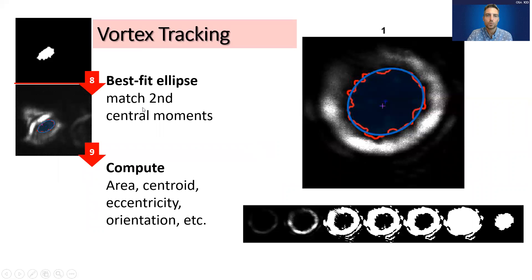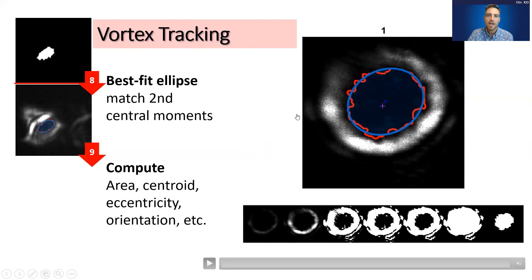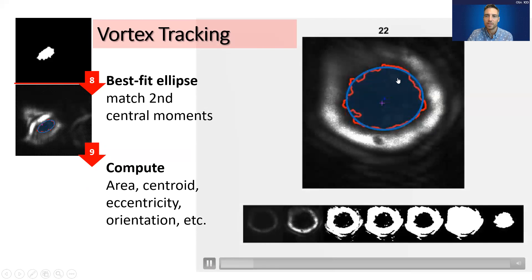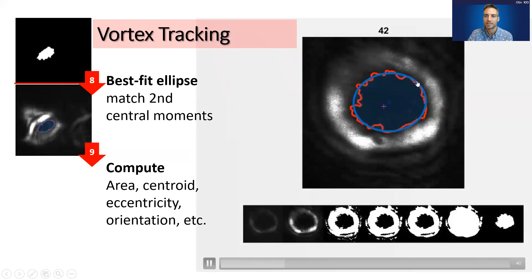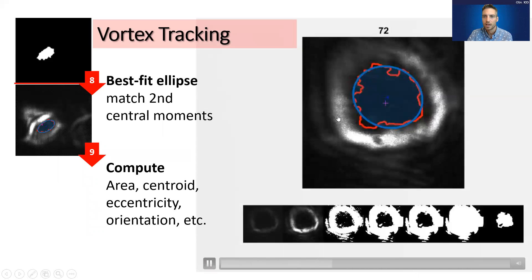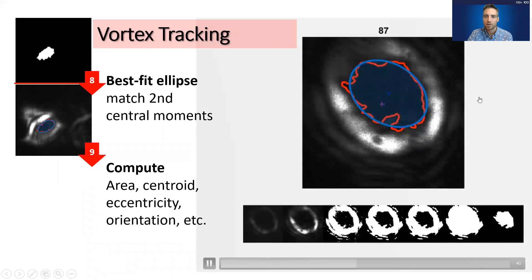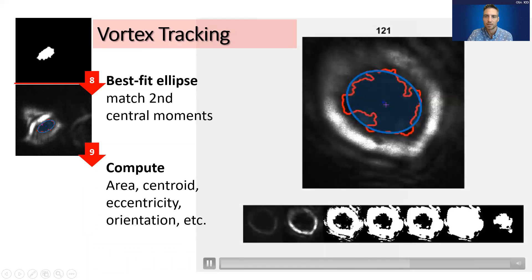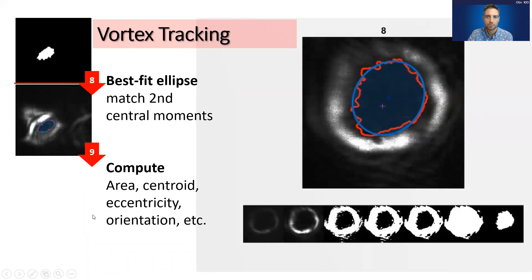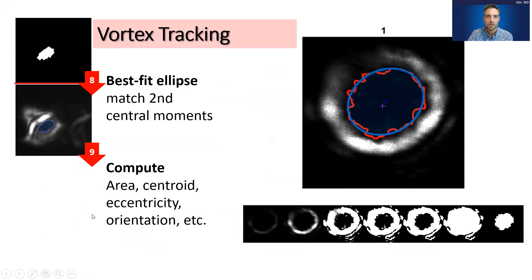What we are left with is an approximately oval-shaped region representing the vortex in the center of the image. From that, we use its second moments to compute a best-fit ellipse, shown as the blue circle. We found that this method is surprisingly robust in the face of optical turbulence and background artifacts. You can see the steps in the processing pipeline here, and that is what we've used to calculate most of the data in this section.